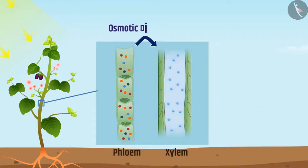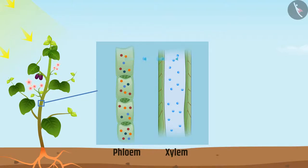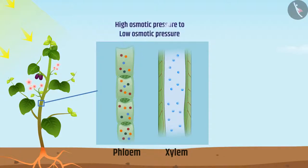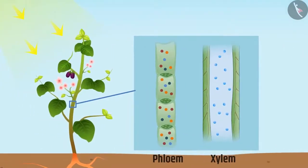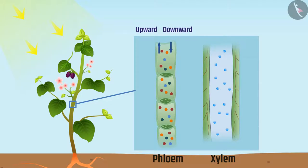This creates an osmotic difference between xylem and phloem. To reduce this difference, water enters from xylem to phloem. This increases the osmotic pressure in the phloem. Water and soluble products move from high osmotic pressure to low osmotic pressure and are transported to different locations such as storage organs, fruits, buds, etc. Keep in mind: phloem carries substances both in upward and downward direction, whereas xylem carries only in the upward direction.